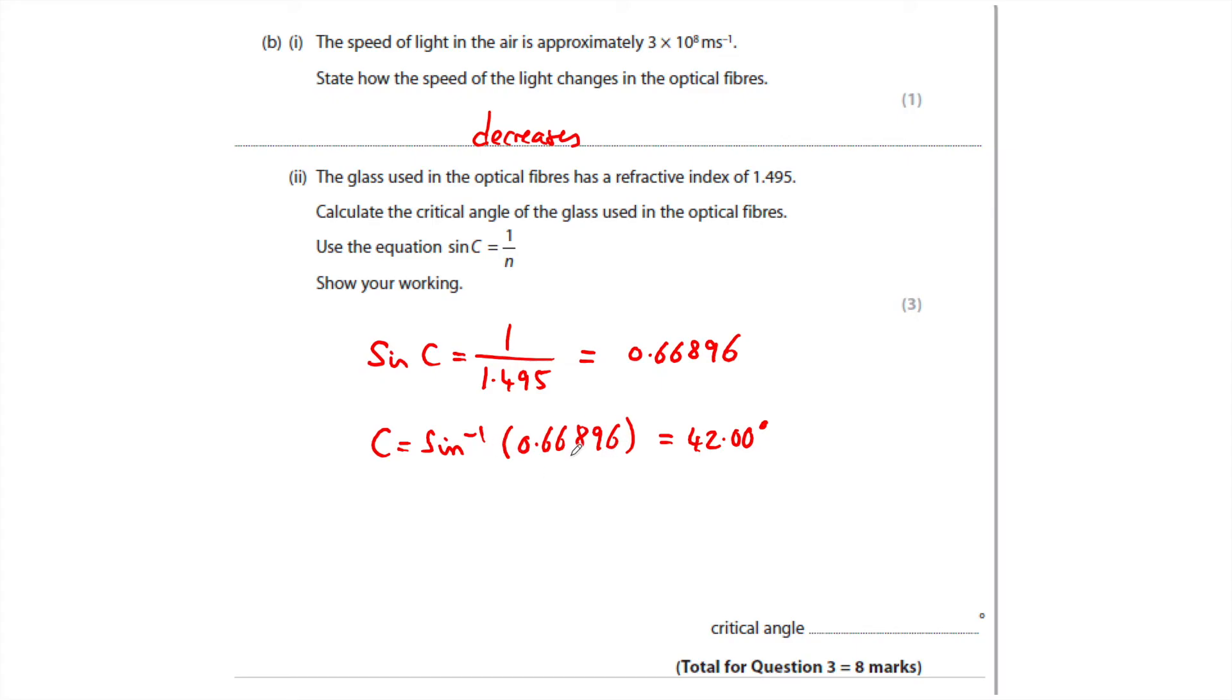You could skip this step if you're confident and just write c is sine to the minus one of one over 1.495. Do that on your calculator, and that gives you 41.98 degrees, which of course is very close, and the mark scheme has anything rounded up to four that can be rounded up to 42.